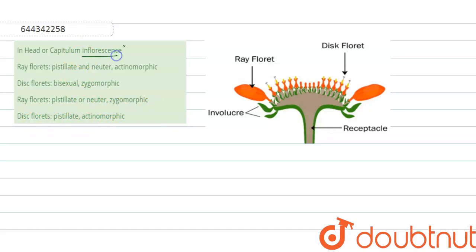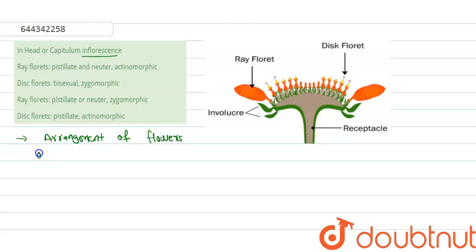Inflorescence is the arrangement of flowers on a plant — that is called inflorescence. Now, in the type of head or capitulum inflorescence, there is a special structure.